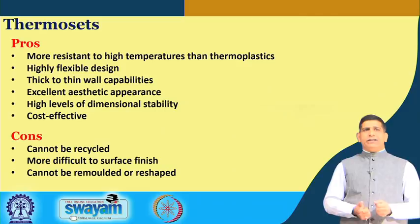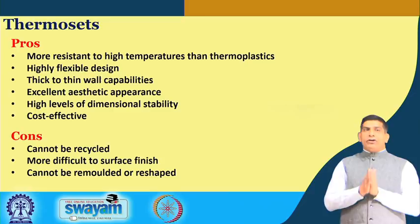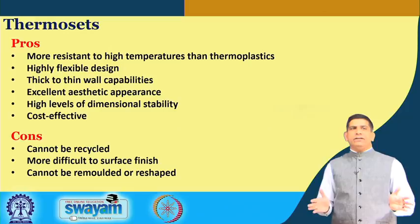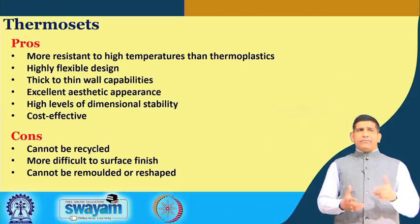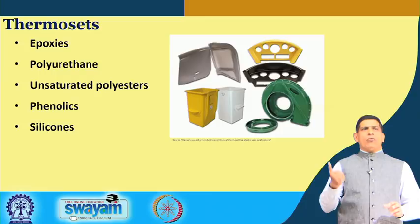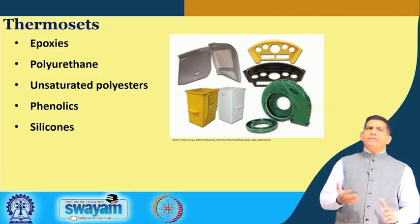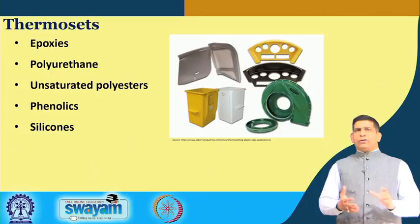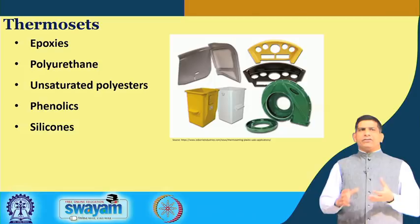The drawbacks of thermosets are that they cannot be recycled, they are more difficult to give a good surface finish, and they cannot be remolded or reshaped — once made, that is it. Both thermosets and thermoplastics have different kinds of applications. Thermosets are used for epoxy, polyurethane, unsaturated polyesters, phenolics, and silicone. A lot of construction applications and different machine parts use thermoset plastics — wherever things may get really heated up, thermoset plastics are more useful than thermoplastics.